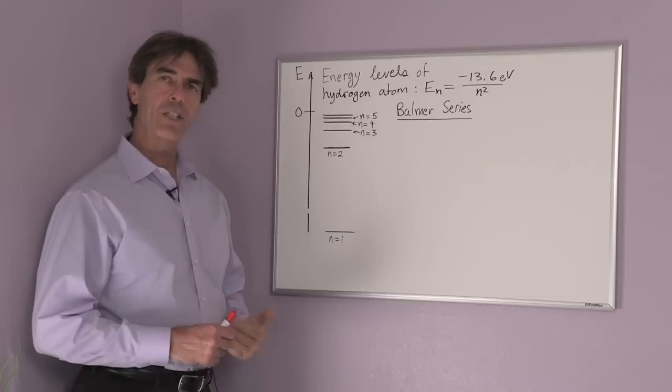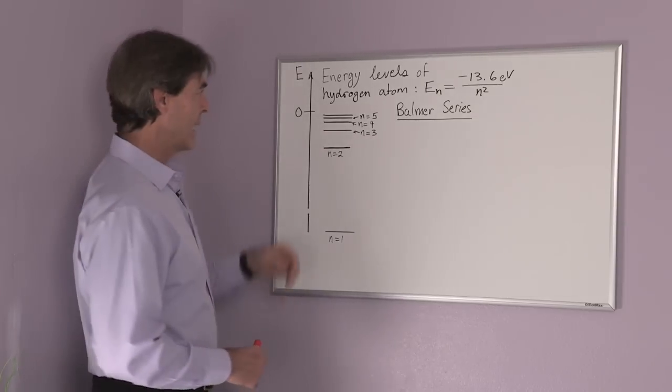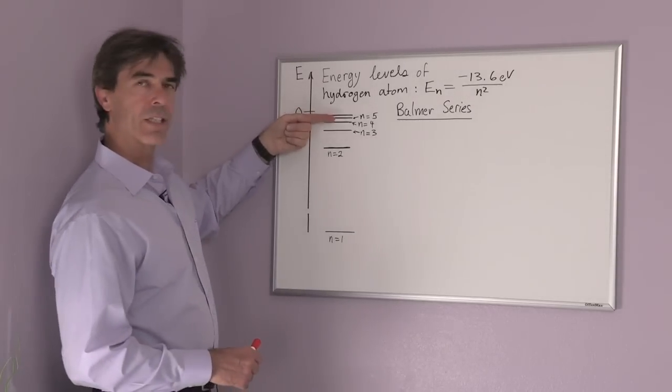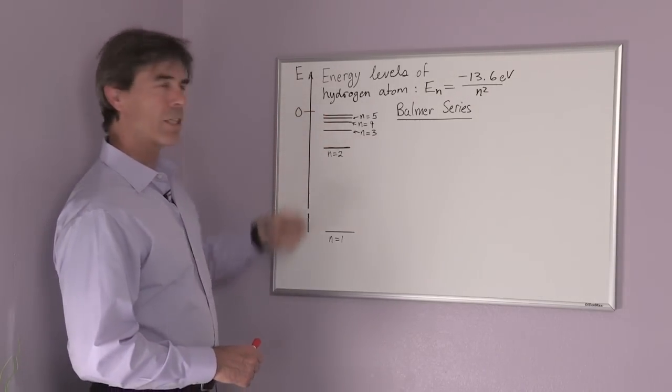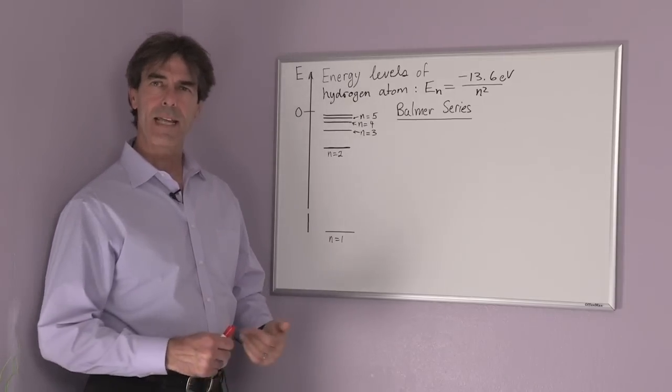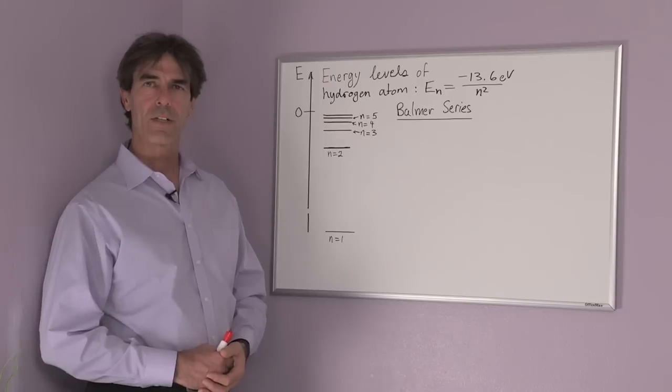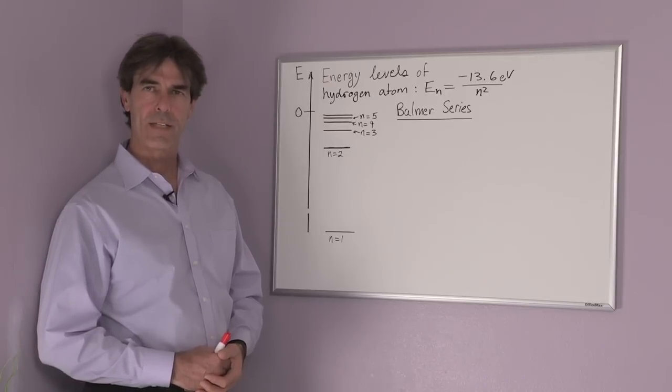When a hydrogen atom changes state, it goes from a higher energy state to a lower energy state, it emits a photon, and that photon has a certain wavelength, and this is what we're trying to calculate.